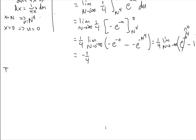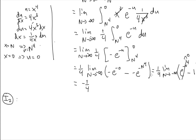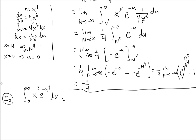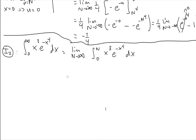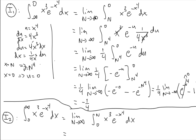Now I need to calculate integral two, which is the integral from zero to infinity of x cubed e to the negative x to the power of 4 dx. It's an improper integral because of the infinity in the upper bound, so I replace infinity with n and take the limit as n goes to infinity at the end. Using the exact same u substitution — u equals x to the power of 4 — the x cubed terms cancel and we get one quarter times the limit as n goes to infinity of the integral from zero to n to the fourth of e to the negative u du.